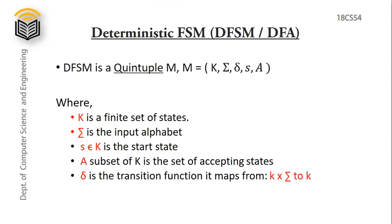Deterministic FSM. DFSM is a quintuple M consisting of K, sigma, delta, S, and A. K is a finite set of states. Sigma is the input alphabet set. S belongs to K, which is the start state — there will be only one start state. A is a subset of K, which is the set of accepting states. Delta is the transition function.